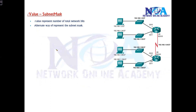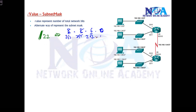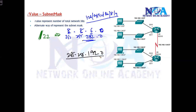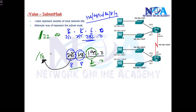Whenever you see a slash value, you should be able to write the equivalent subnet mask. For example, slash 22 means 8+8+6 = 22, so the subnet mask is 255.255.252.0 — because 6 bits: 128+64+32+16+8+4 = 252. Similarly, when you see a subnet mask like 255.255.192.0, you should find the equivalent slash value: 8+8 = 16 bits, and 192 means 2 bits, so it is slash 18. You need to be able to convert in both directions.